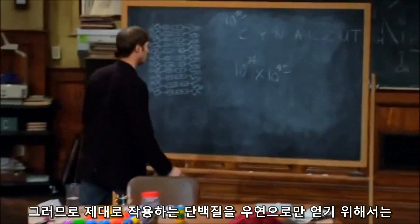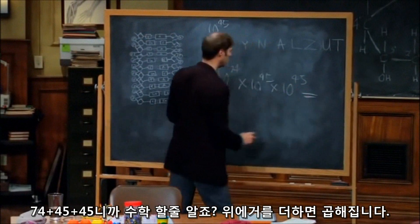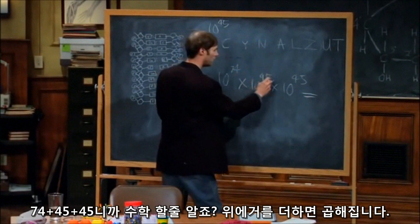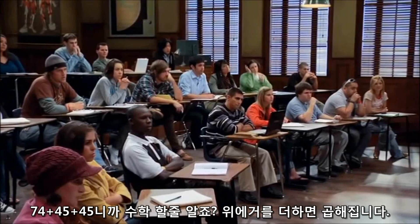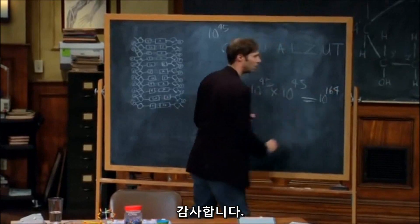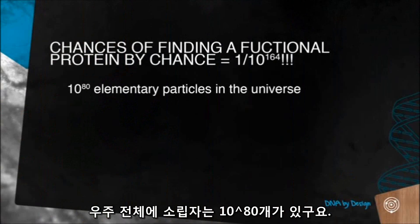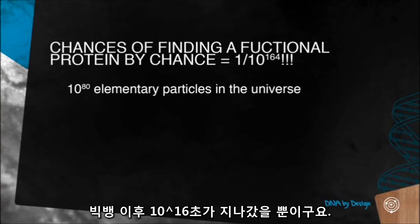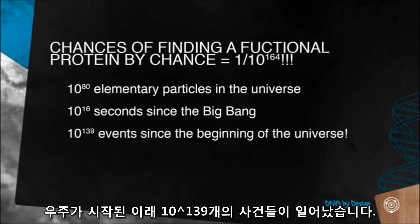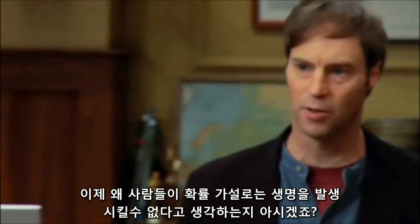So the odds of building even a short functional protein by chance alone: 74 plus 45 plus 45 — you can add the exponents when multiplying exponential numbers — equals 10 to the 164th power. There's only 10 to the 80th elementary particles in the entire universe, only 10 to the 16th seconds since the Big Bang, and only 10 to the 139th total events since the beginning of the universe. Now you're starting to understand why people are very skeptical that the chance hypothesis is going to do the job.